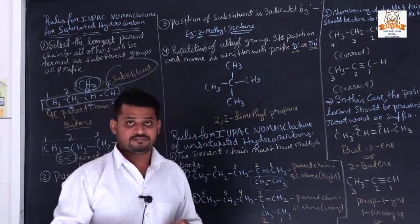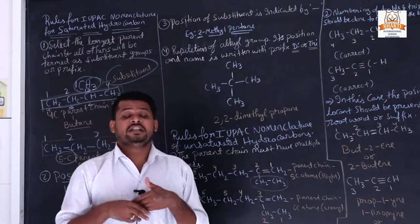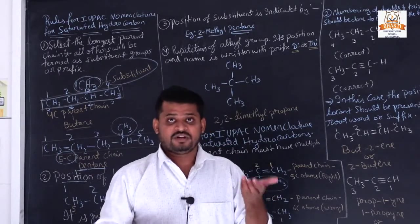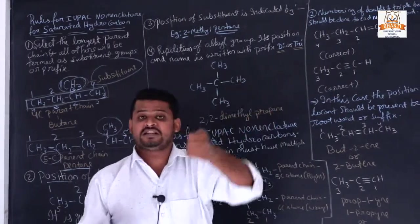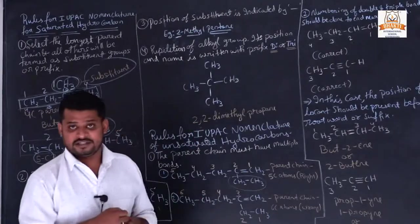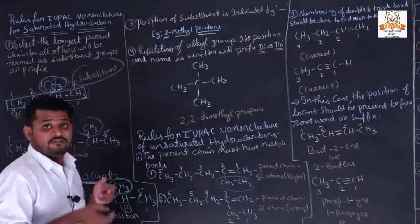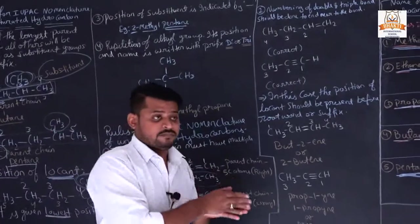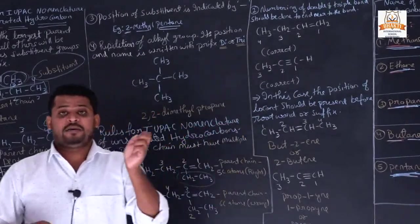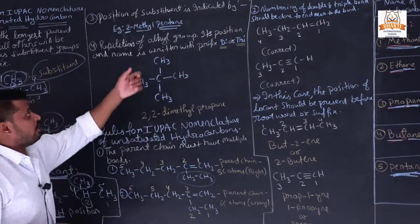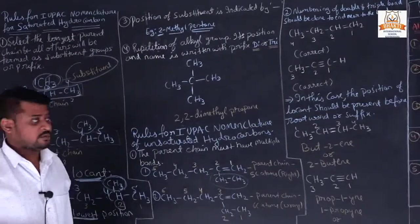Did you understand how we write the molecular name of any structural formula? First we make the parent chain, then we give the root word name. You will study what is word root name, what is prefix, and what is suffix in our next topic on nomenclature of hydrocarbons. The steps are: first select the parent chain and count carbon atoms, then find the position of the substituent, then give the name.